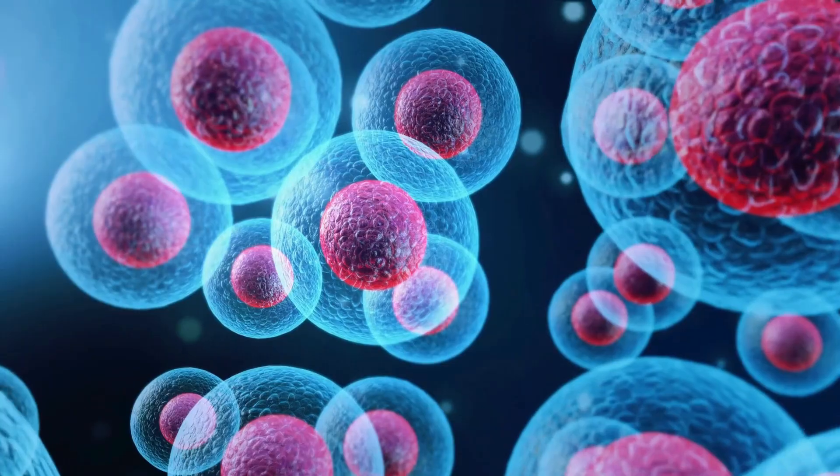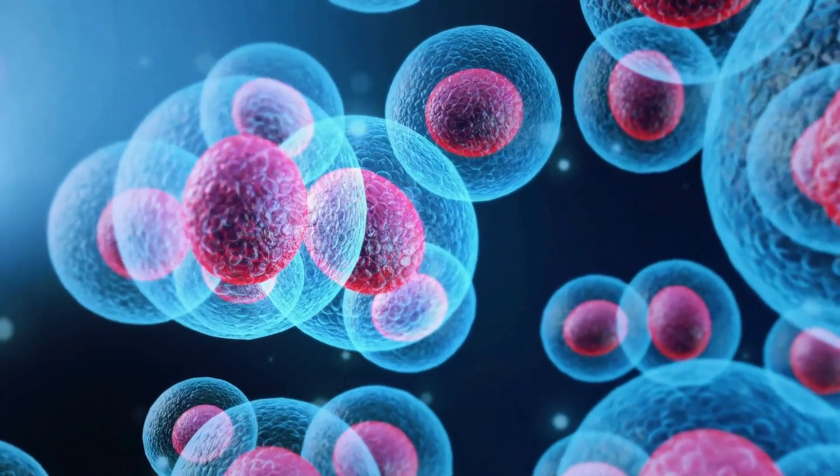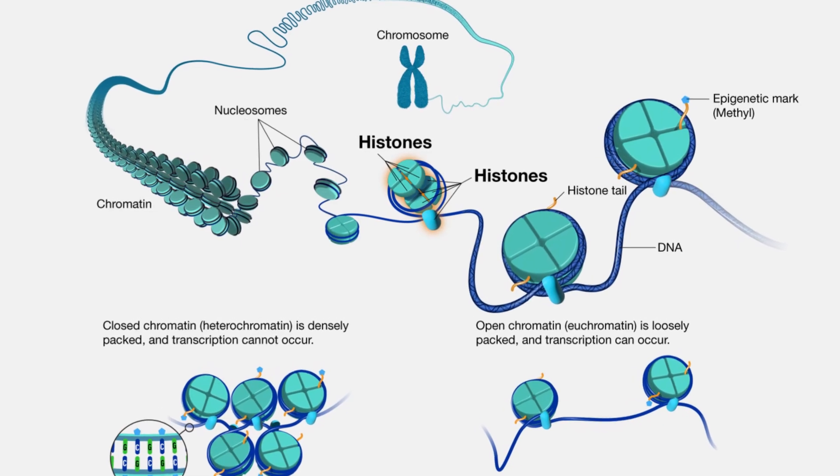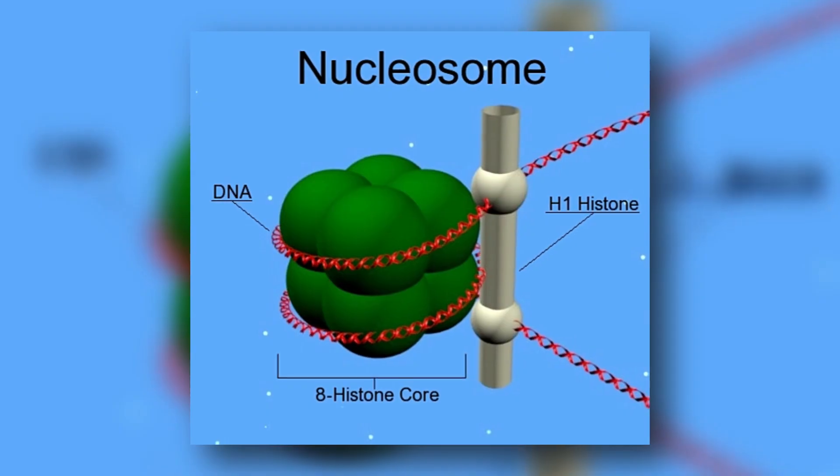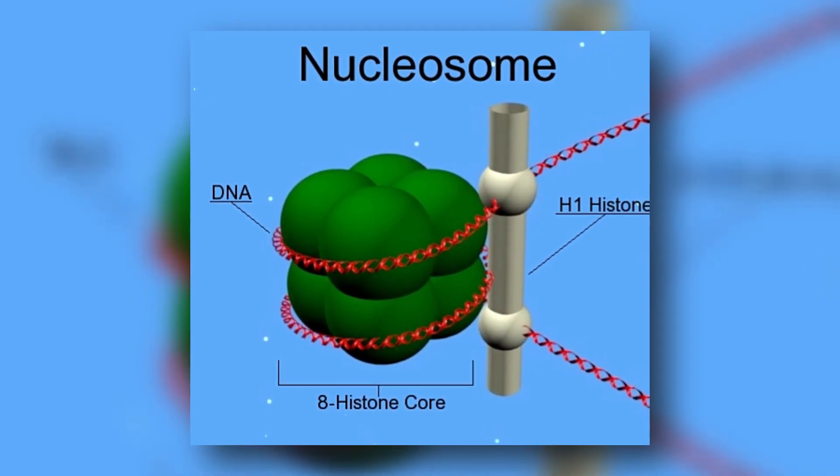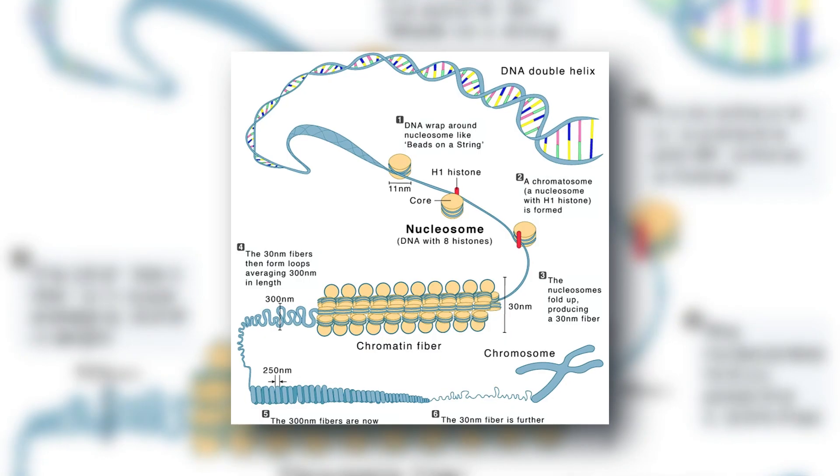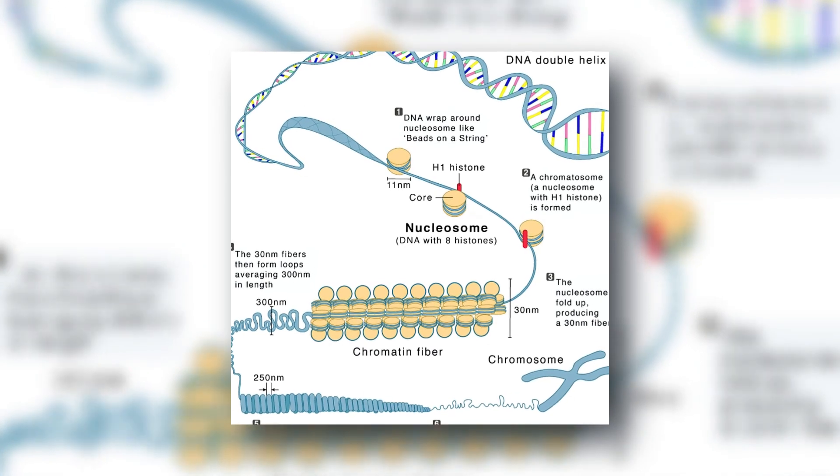In human cells, DNA cannot float freely. It is wrapped around proteins called histones, forming structures called nucleosomes. These nucleosomes coil and fold to fit nearly two meters of DNA inside a tiny nucleus. Without this packaging, DNA would never stay organized.